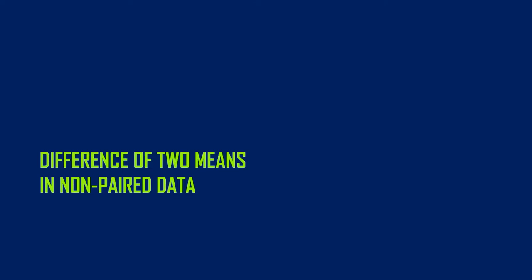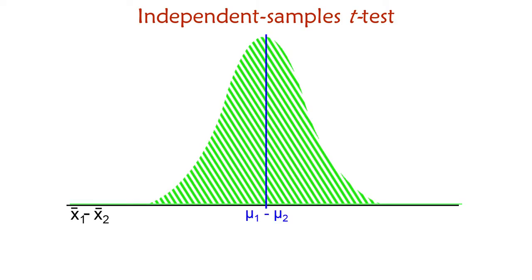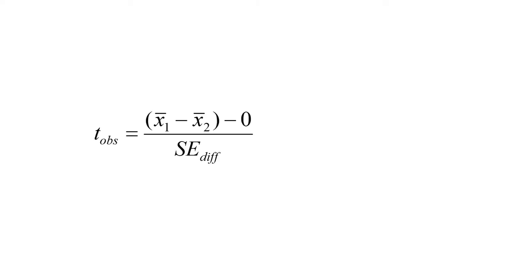Let's pick up where we left off, still talking about the difference between two means in non-paired data — the independent samples t-test. We've gone through the conceptual setup, and everything boils down to the same as other kinds of tests of means. You've got this normal or t-shaped distribution of differences between all possible means. The mean of this distribution will always be zero, you look up t-critical values based on a degrees of freedom formula, and then calculate a t-observed. The process is not that complicated; the setup is a little more complicated, but the process itself is not.